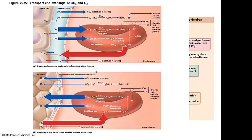What happens if the opposite occurs — if I don't have enough carbon dioxide? The equation will go the opposite direction and pH is going to rise — it will be more alkaline. Disruption of pH is going to disrupt chemistry. Carbon dioxide may be a waste gas, but there has to be a fine balance.